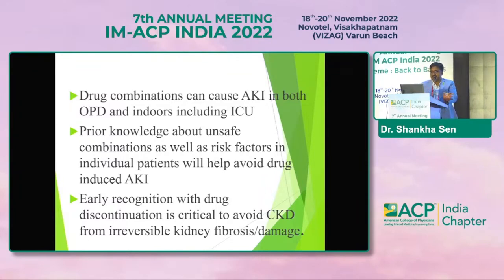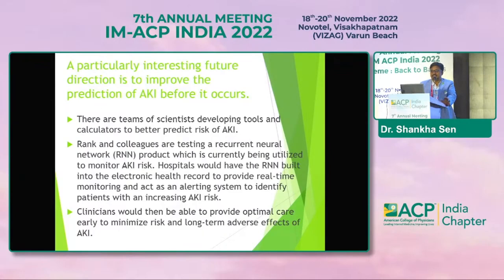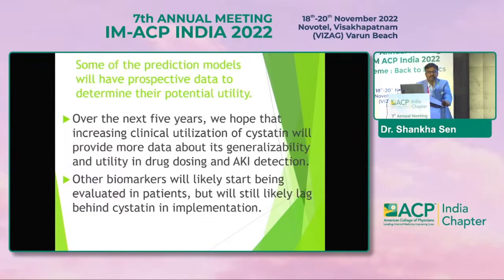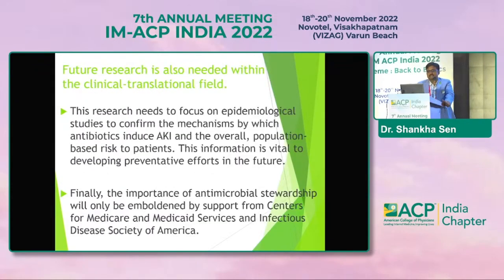Drug combinations are important, and teams of scientists are developing tools and calculators to better predict AKI — including recurrent neural networks being tested by Rank and colleagues. Clinicians would then be able to provide optimal care early to minimize risk and long-term adverse effects. Over the next five years, we hope clinical utilization of cystatin C will provide more data about generalizability and utility in drug dosing and AKI detection. Other biomarkers will likely be evaluated in patients but will still lag behind cystatin C in implementation. Research needs to focus on epidemiological studies, and the importance of antimicrobial stewardship will be reinforced with support from relevant authorities.